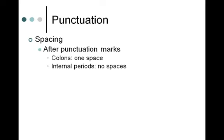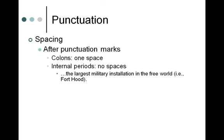Some exceptions to the rules: if you have internal periods, there are no spaces. This applies to abbreviations. For example, 'i.e.' — which is the abbreviation for 'id est,' meaning 'that is' — there's no space between the period and the 'e,' and no space between the 'e,' the period, and the comma. But after the comma, there would be a space. Internal to the abbreviation, there's no spacing.